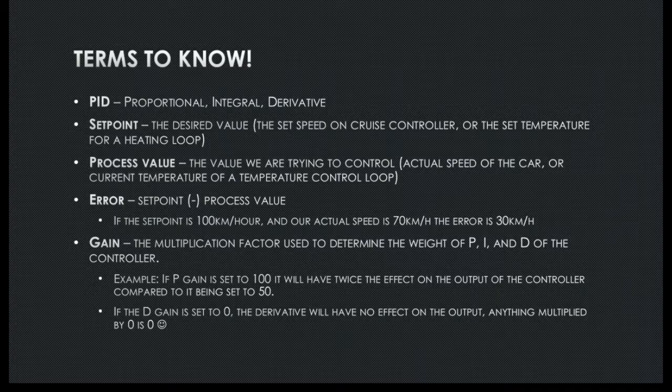Another example would be the D gain. In a PI controller, there is no D and the D gain would be set to zero, so the D has no effect on the output — because anything multiplied by zero is, well, zero.